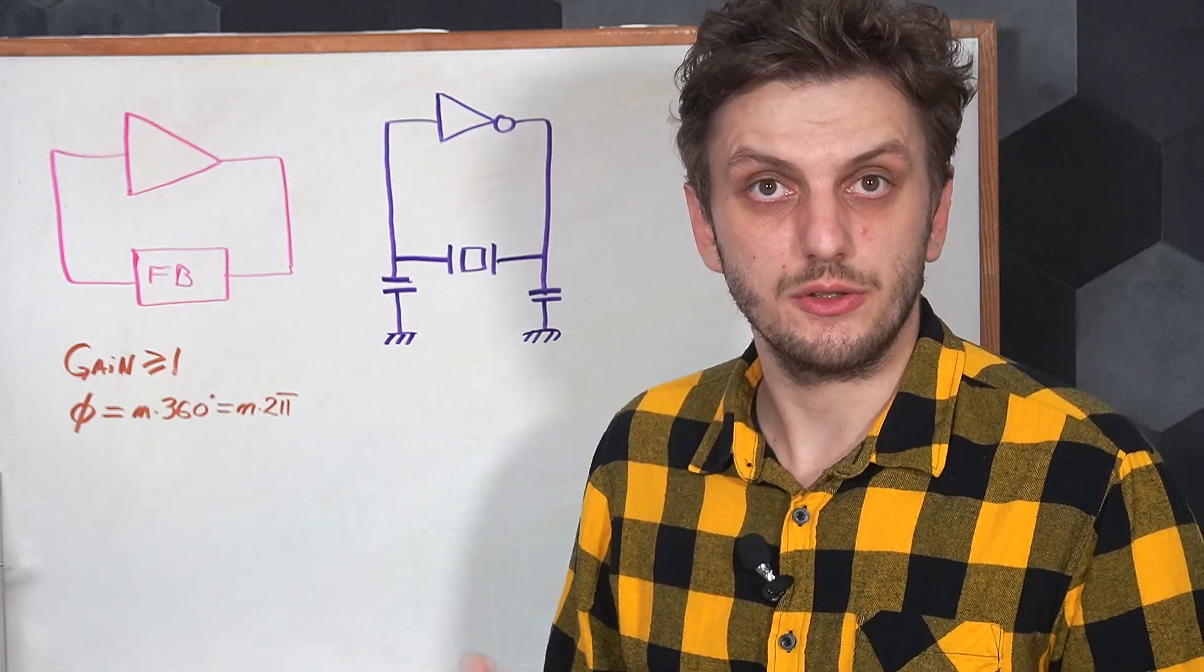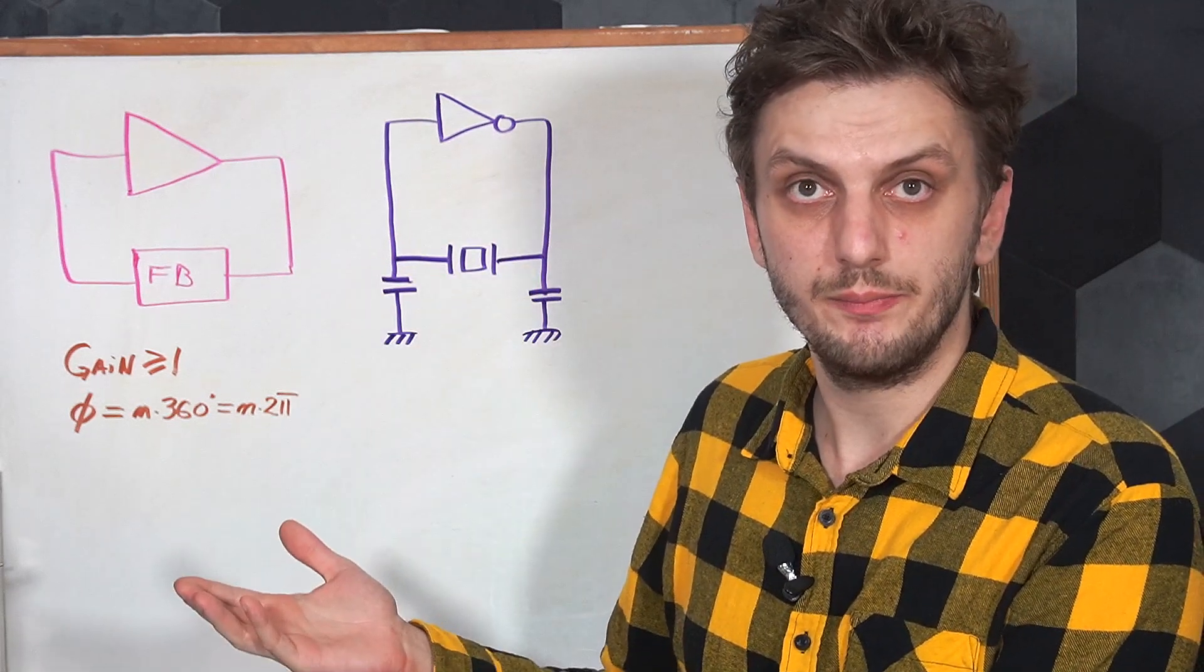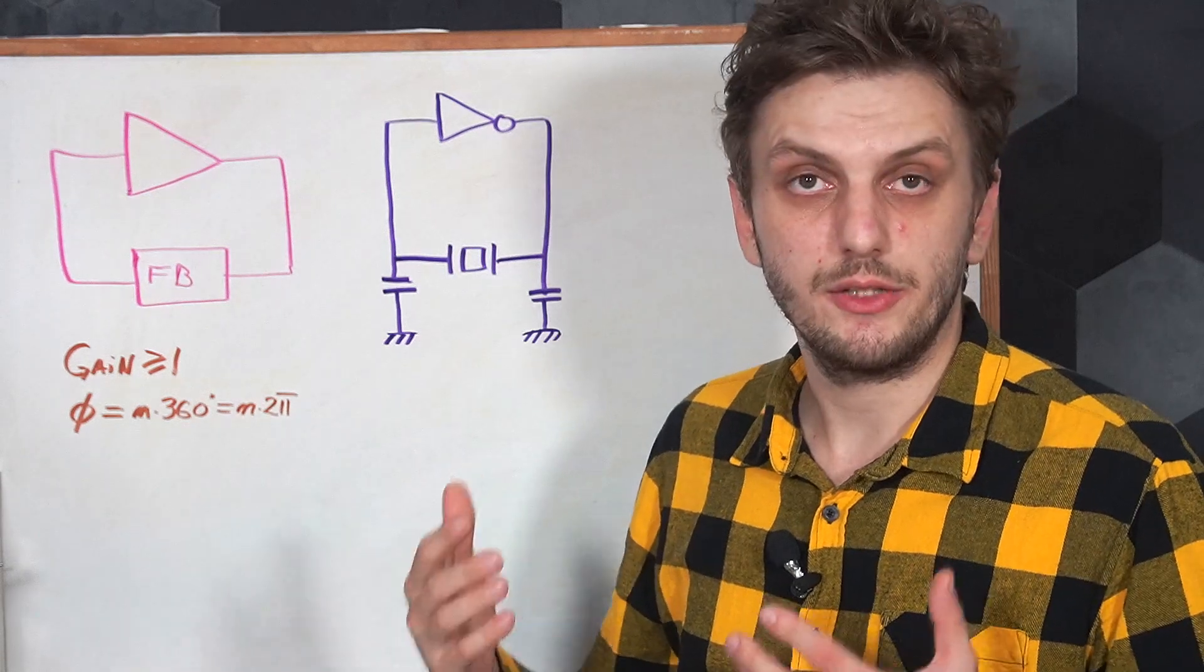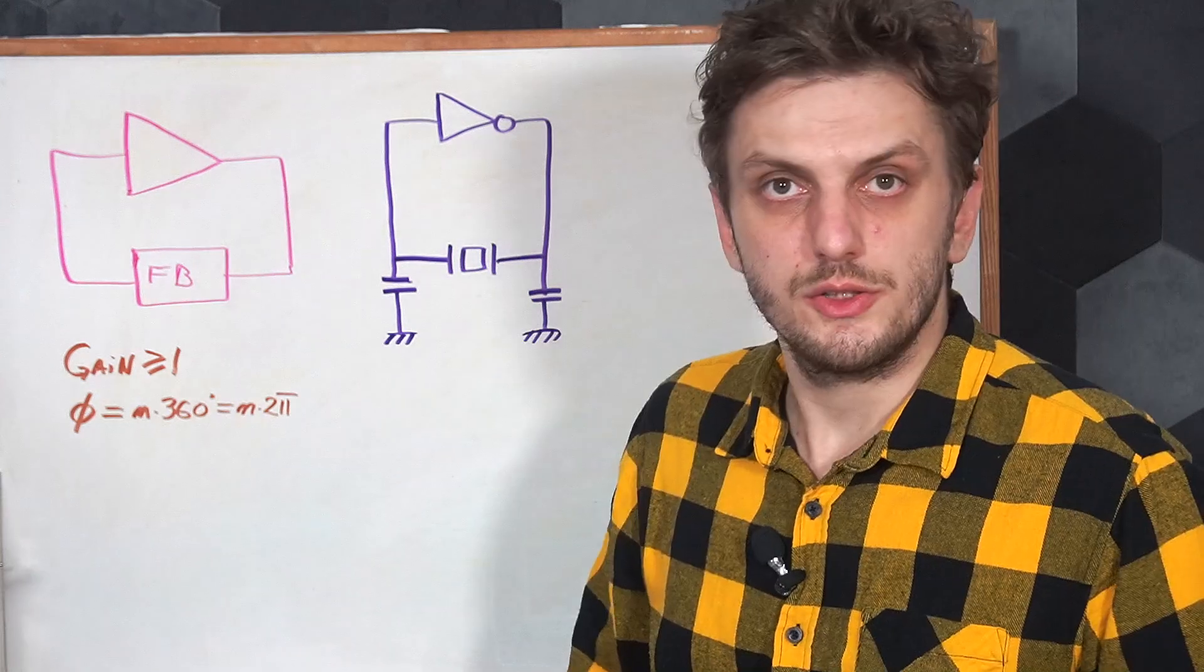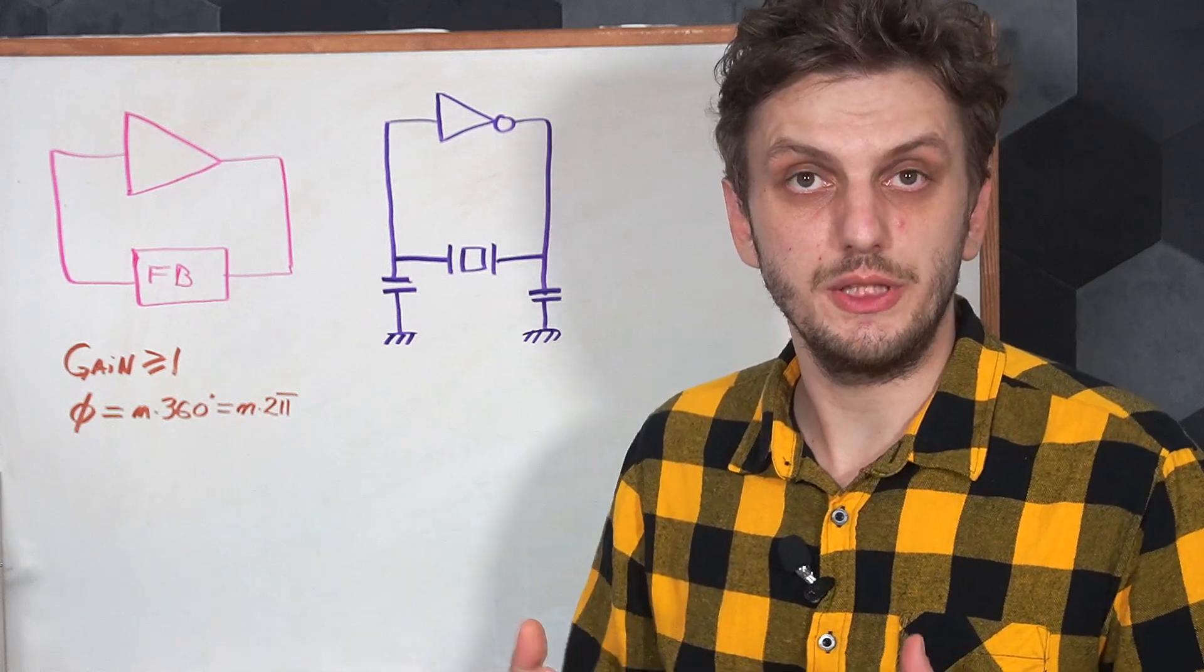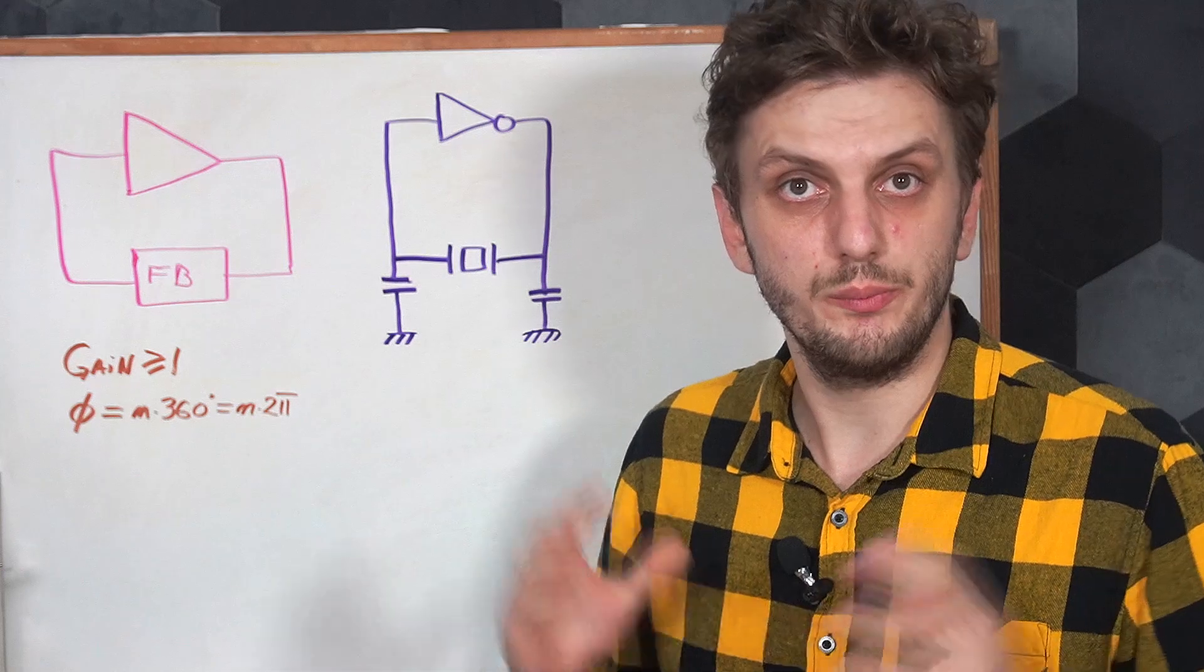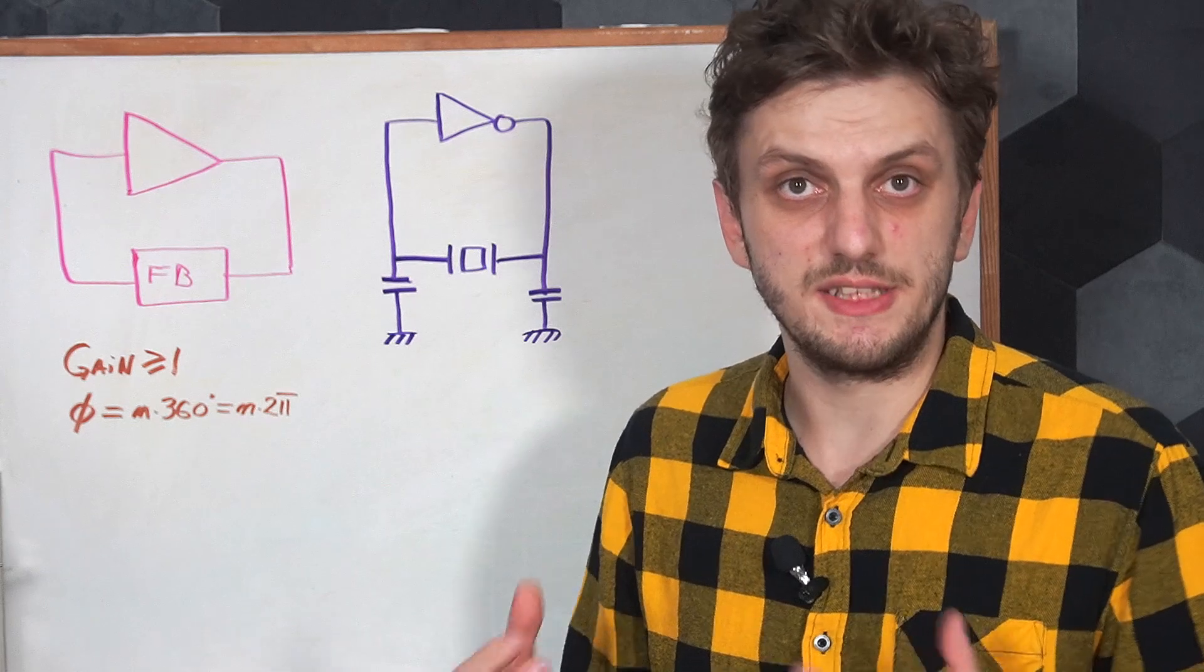So now if we look at our Pierce crystal oscillator, the amplifier is providing the gain, and for the phase shift, 180 degrees are provided by the inverting feature of our amplifier, and the rest of the 180 degrees are coming from our external circuitry. So to verify that our circuit oscillates and it has margin to oscillate, we would need to somehow measure its gain. But this is quite a difficult thing to do, considering how sensitive the crystal oscillator is to external circuitry. So you can't really measure the gain without being too invasive into the circuit.